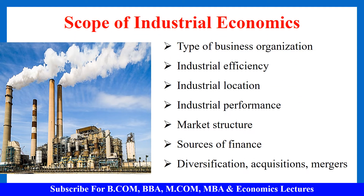The scope of industrial economics includes the type of business organization, industrial efficiency covering proper quality and quantity of production, the location of industry, the performance of the industry, and the market structure. The scope also covers the sources of finance from where capital can be arranged, the determinants of profitability, and modern concepts like diversification, acquisitions and mergers.